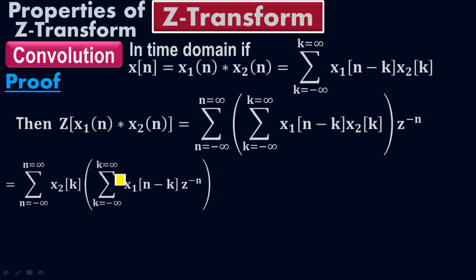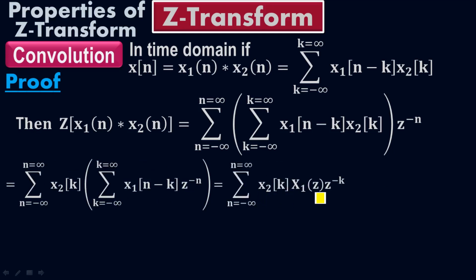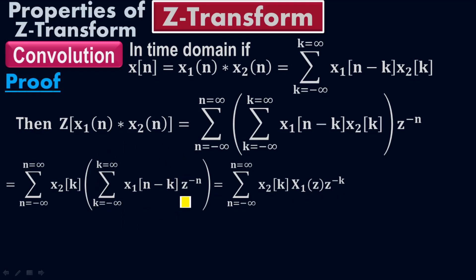Now, according to the Z-transform formula, I can write: summation of X2(K) times X1(Z) times Z to the negative K. The expression inside the parenthesis is the Z-transform of X1, so it becomes X1(Z). According to the time-shifting property, the summation of X1(N minus K) times Z to the negative N equals X1(Z) times Z to the negative K.